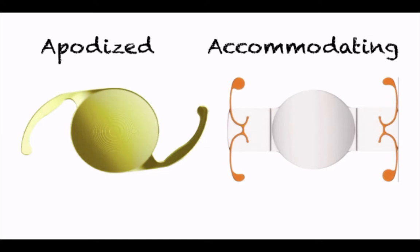Accommodating intraocular lenses move anteriorly through the ciliary body contraction. This provides patients additional power for near vision through the movement of the lens.